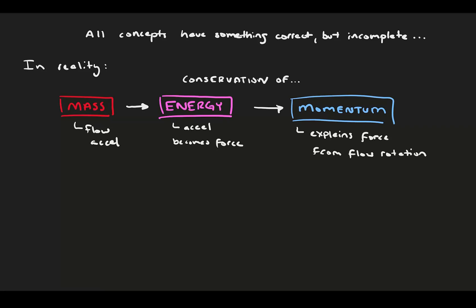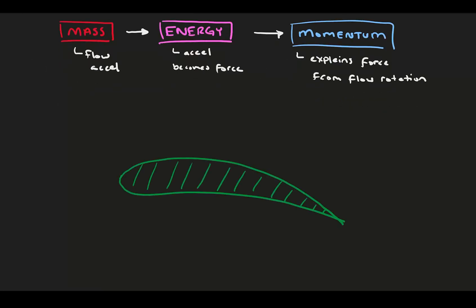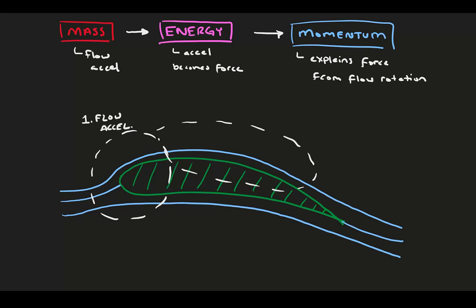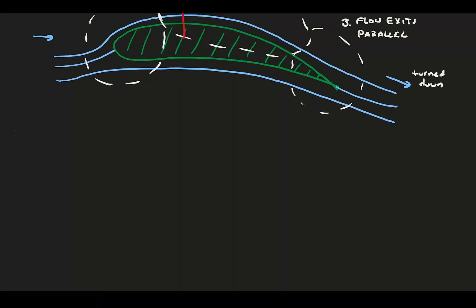Consider, again, a foil at an angle of attack with flow passing over it. We're going to consider the foil in three main sections. At the nose is section one, where there is accelerated flow. Over the top curvature is section two, where flow stays attached to the surface despite its curvature. And at the trailing edge is the section three, where flow exits nice and parallel and cleanly. This results in flow being turned downwards and the body feeling lift. Let's consider each section in detail.